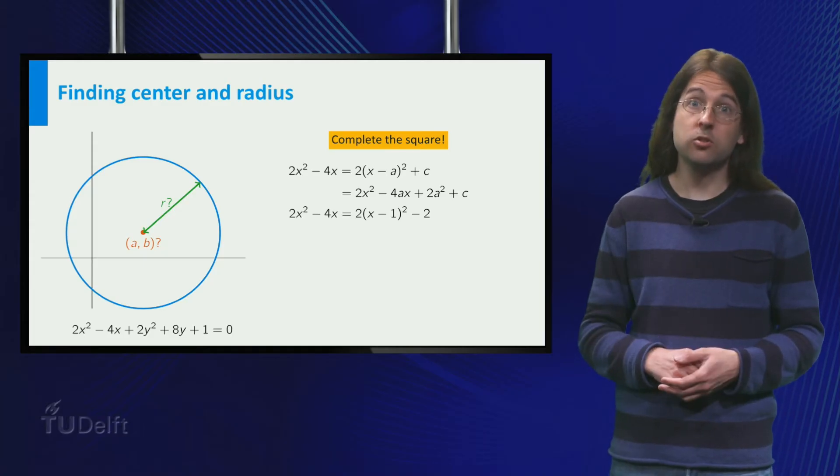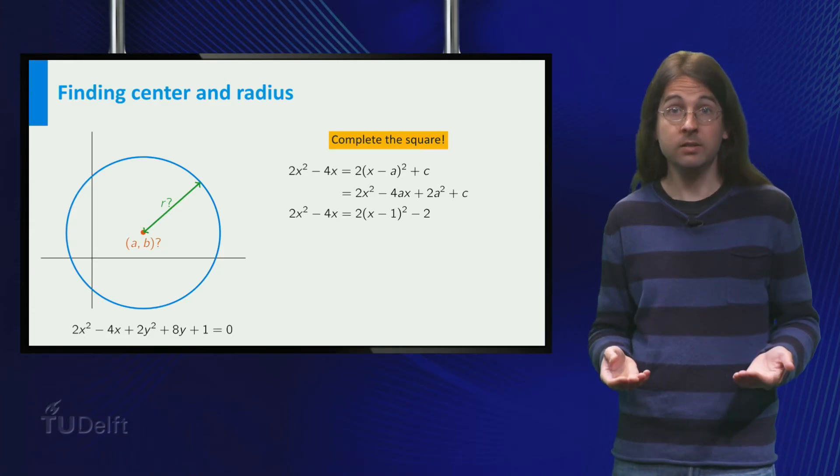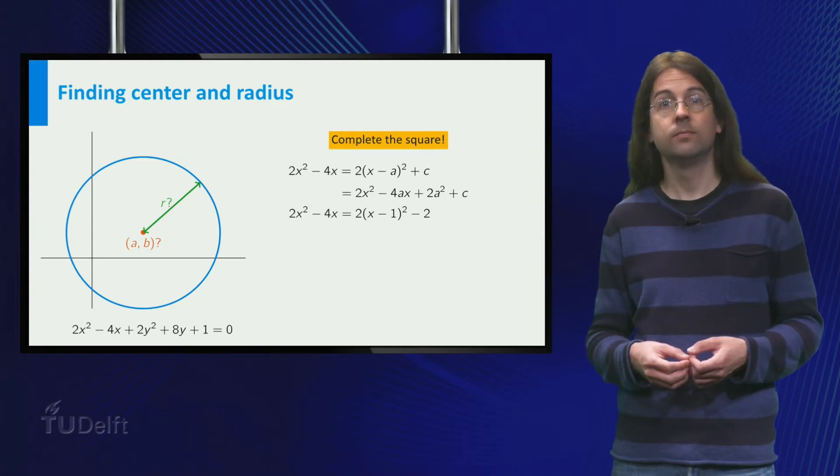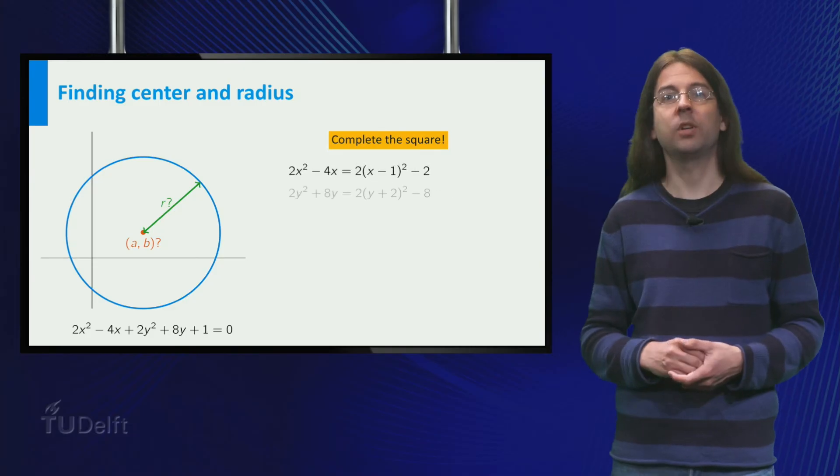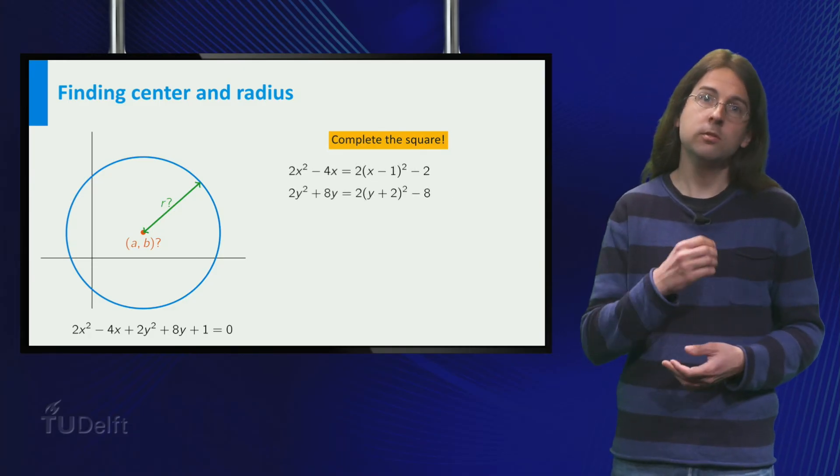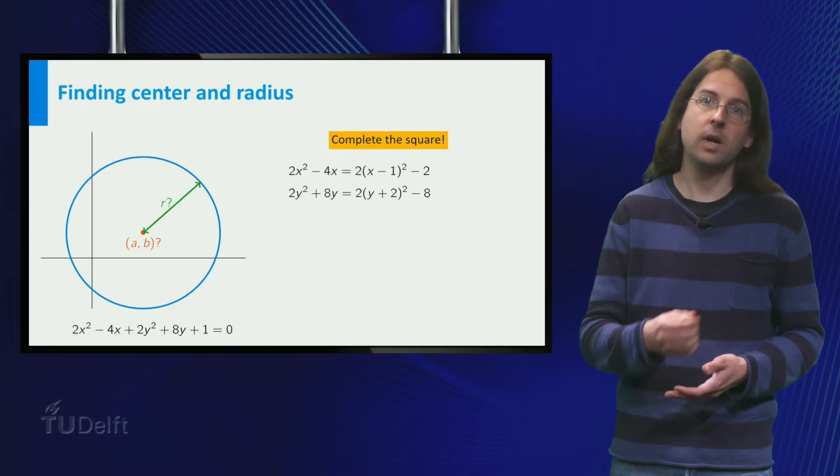Can you now complete the square for 2y squared plus 8y? That's right, 2y squared plus 8y equals 2 times y plus 2 squared minus 8.